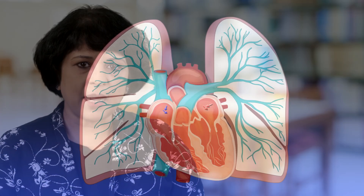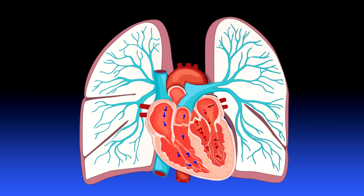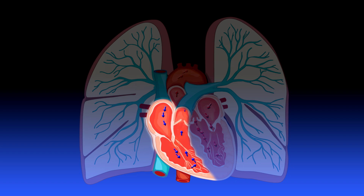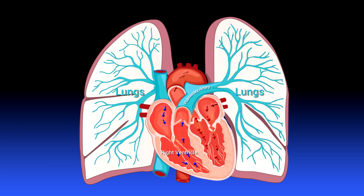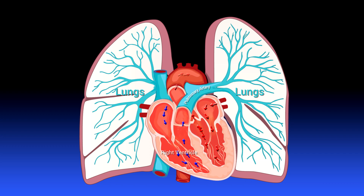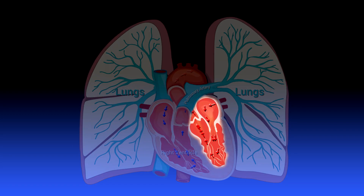In order to understand blood flow through the heart and the lungs, it is important to know the circulation route the blood takes. The right side of the heart receives blood lacking oxygen from the body, and the right ventricle pumps it into the lungs through the pulmonary artery. In the lungs, the blood absorbs oxygen and releases carbon dioxide, which is exhaled. The oxygen-rich blood is then returned to the left side of the heart via the pulmonary veins and pumped to the rest of the body by the left ventricle.